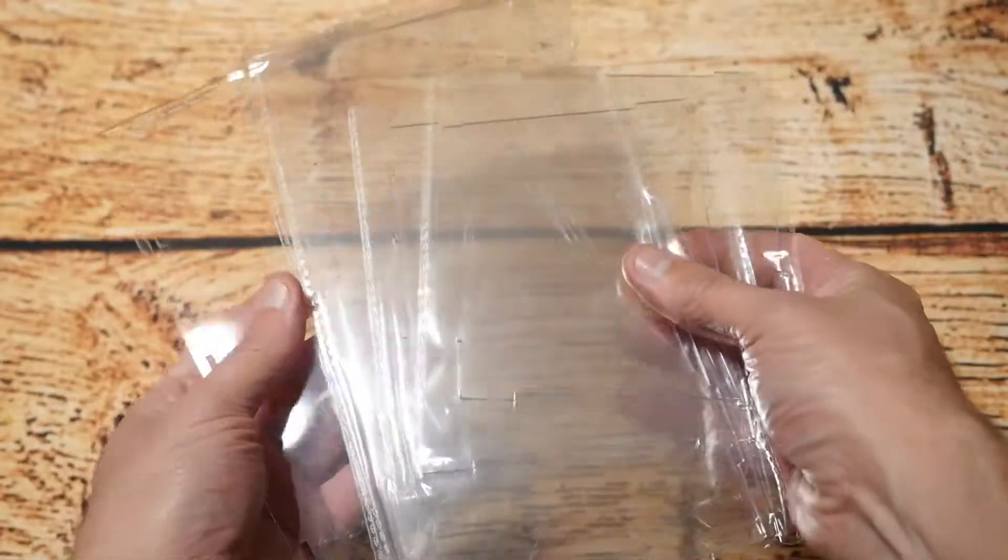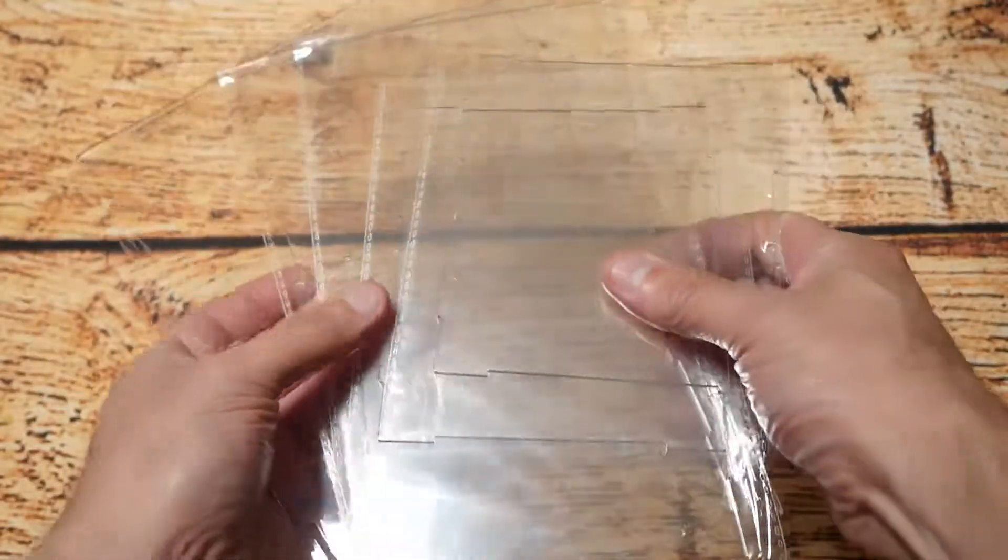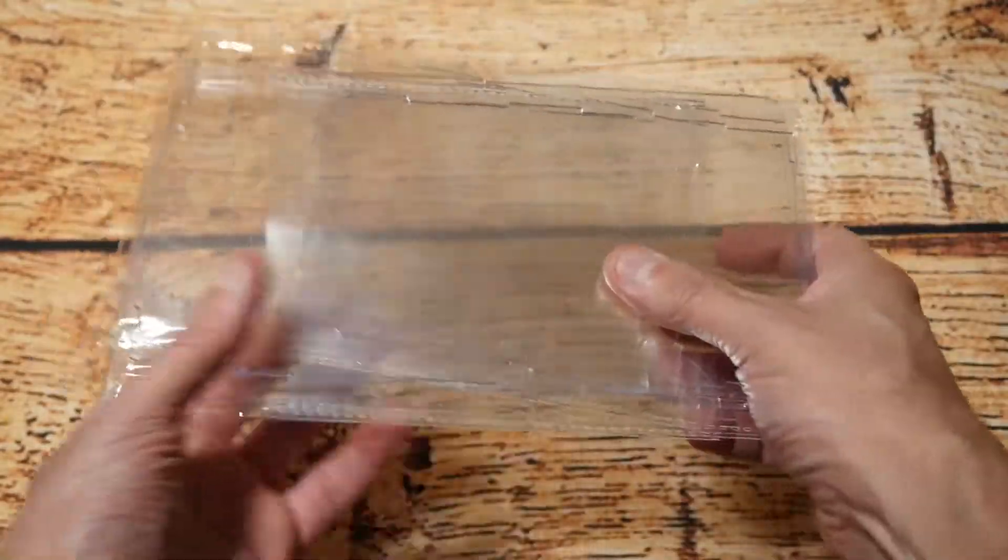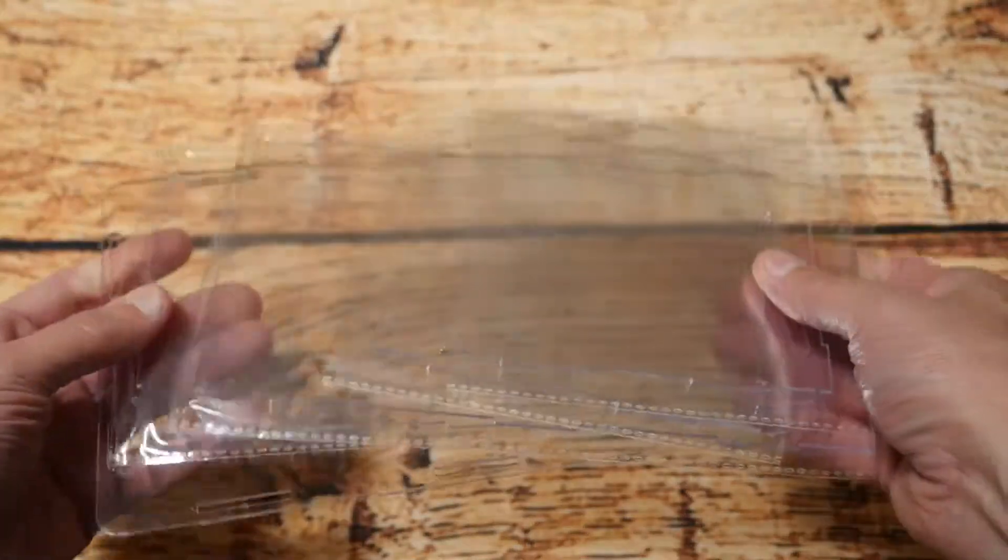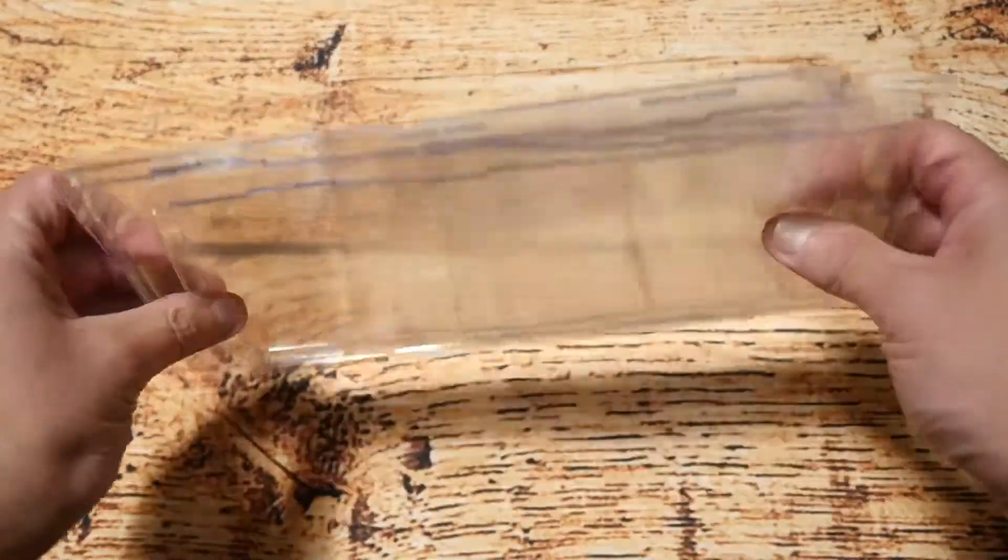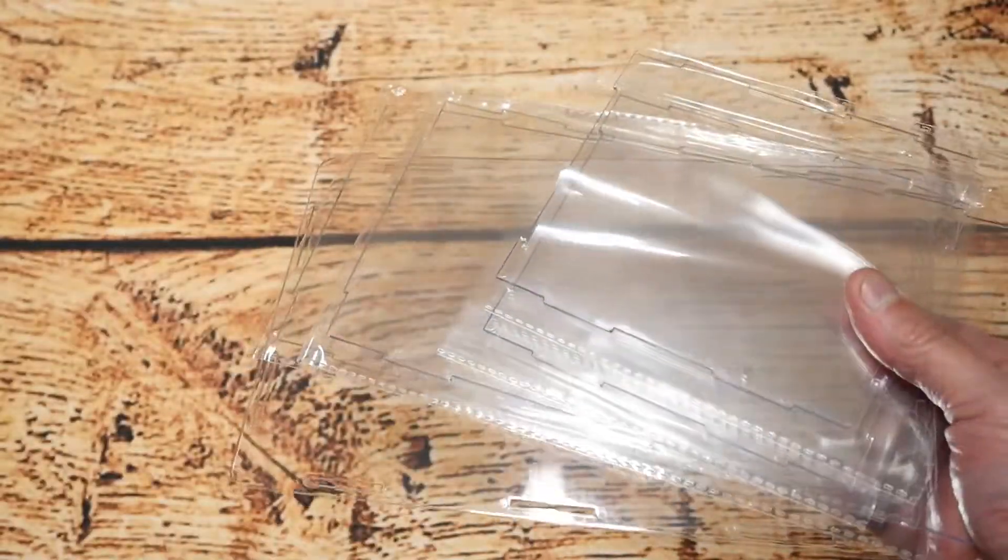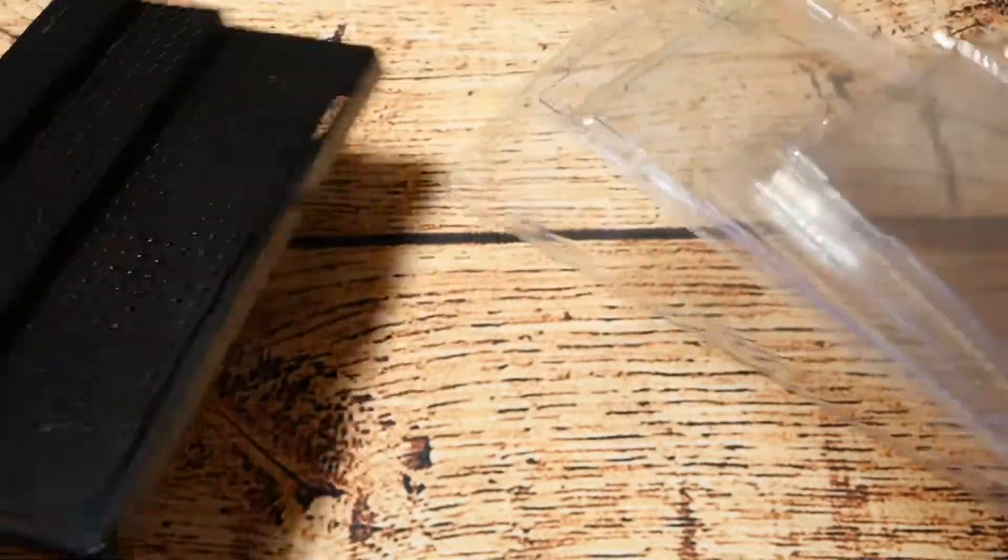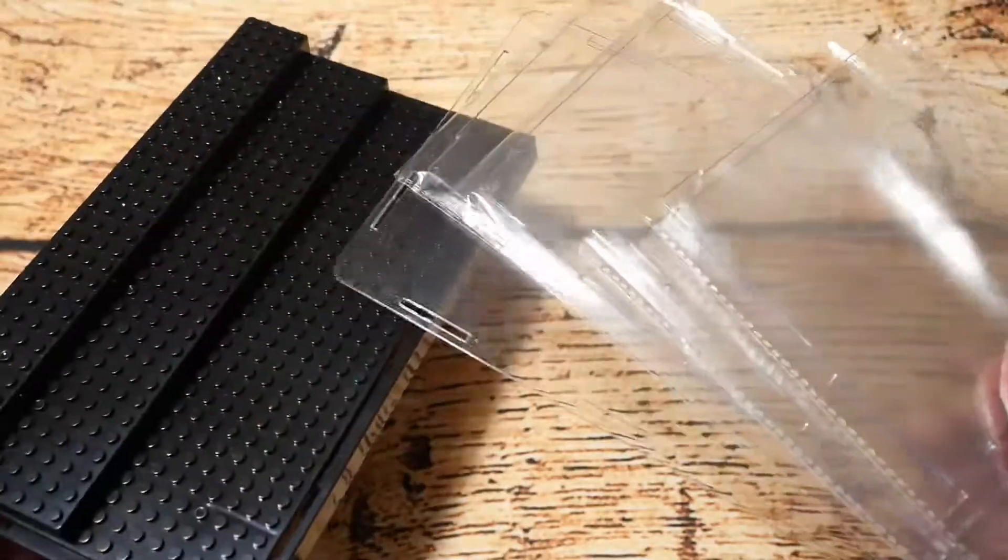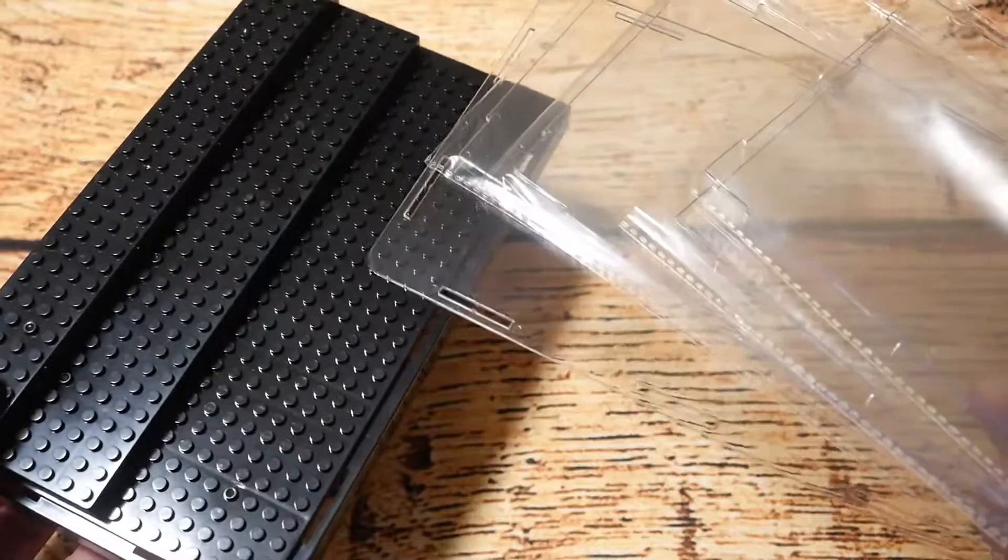Next are these panels here, which are basically Perspex, and this is to encase the display case so that it keeps the dust off the minifigures and keeps them looking neat. What I'm going to do next is get these and install them together, show them all made together, and then I'll get my minifigures and put them in. So let's have a look at it all put together.